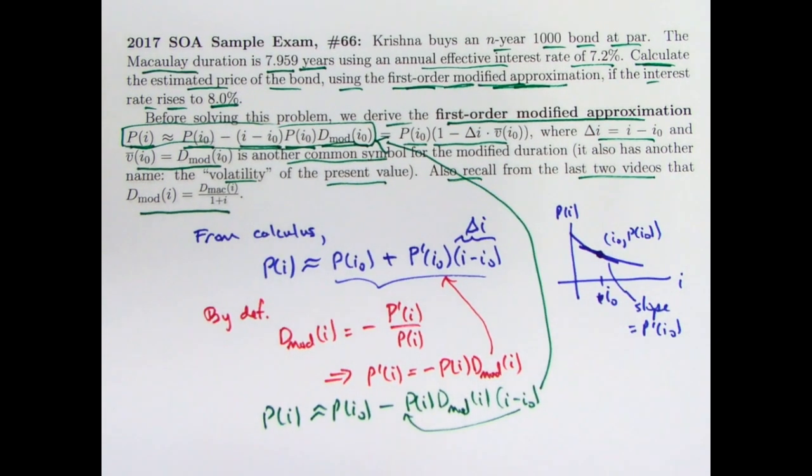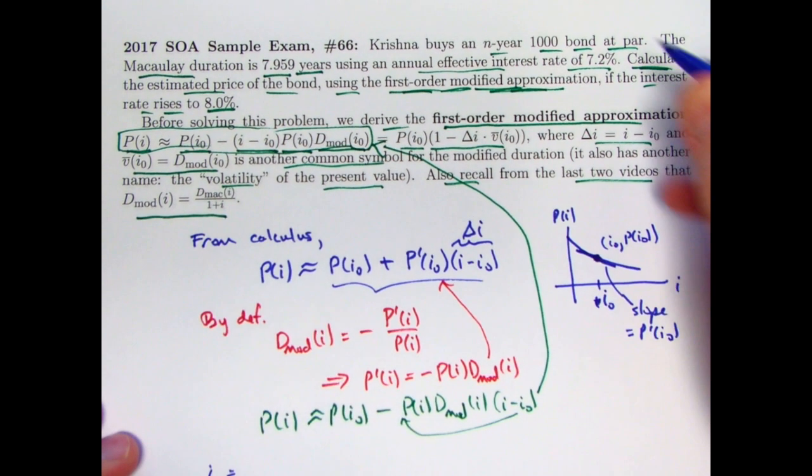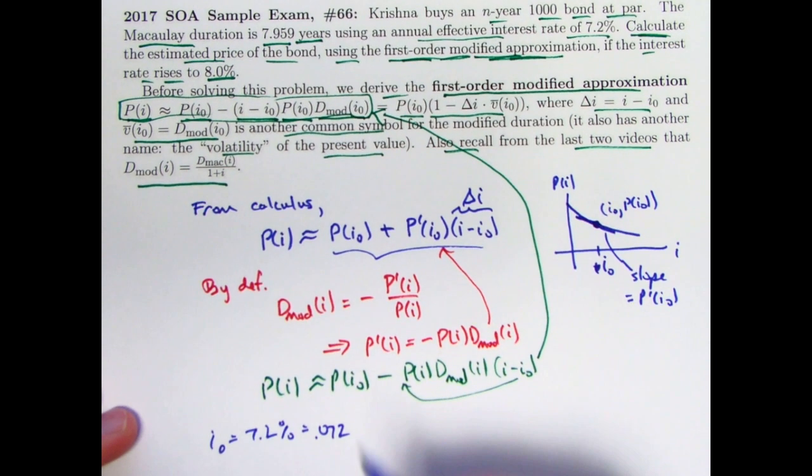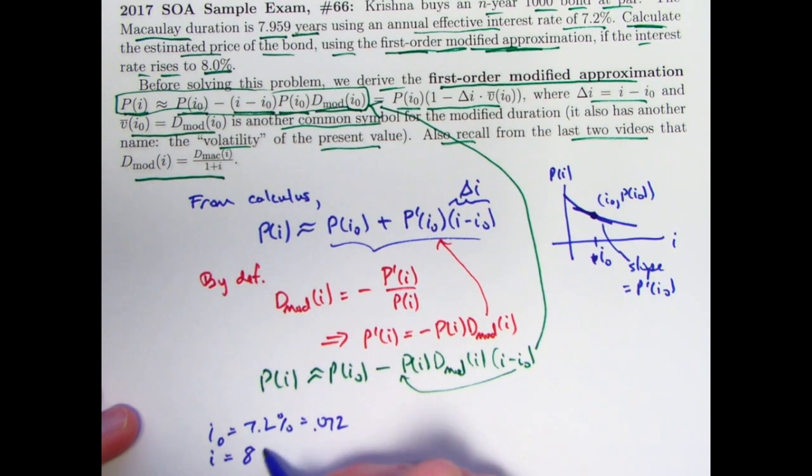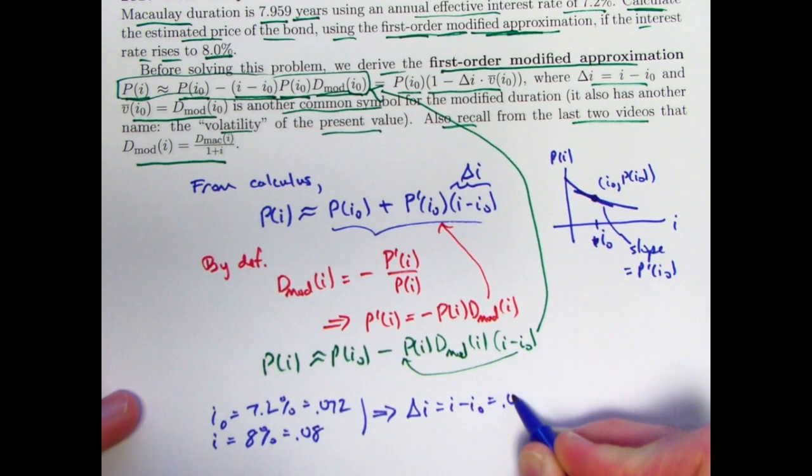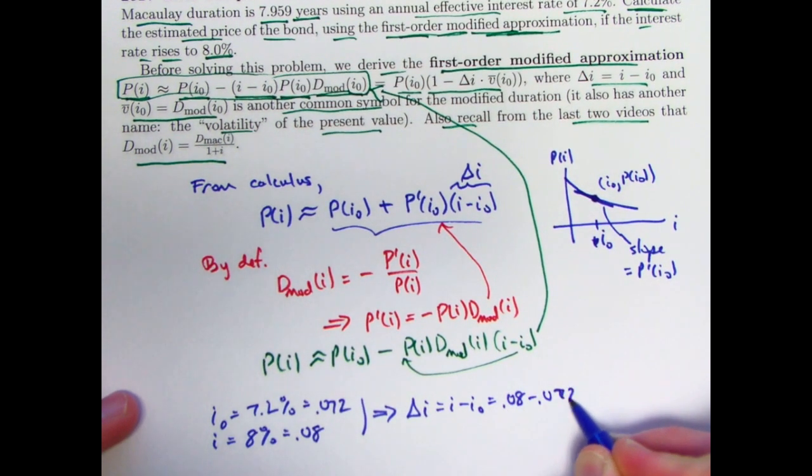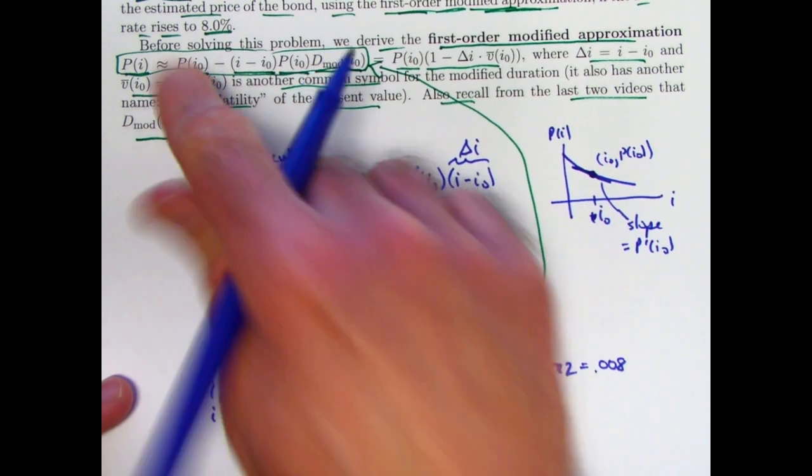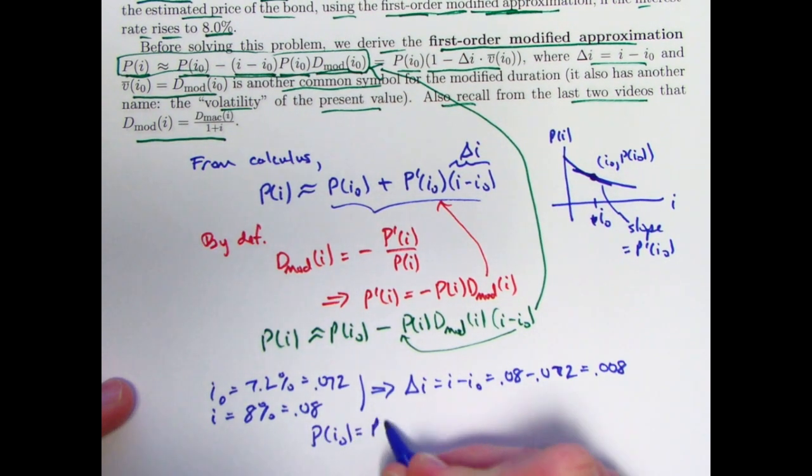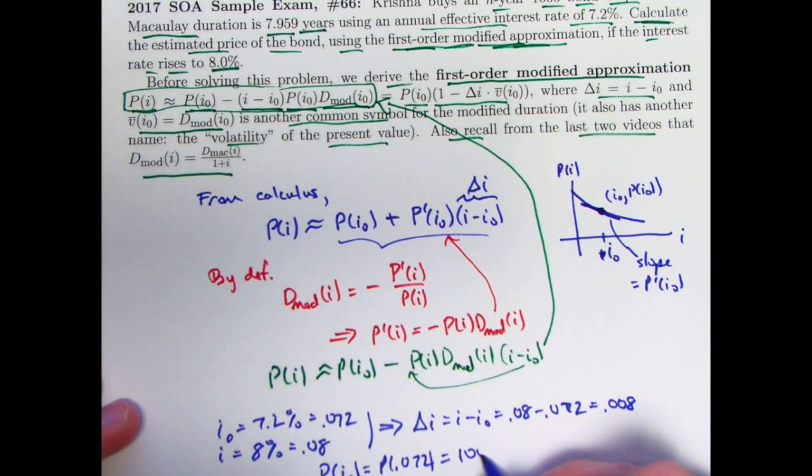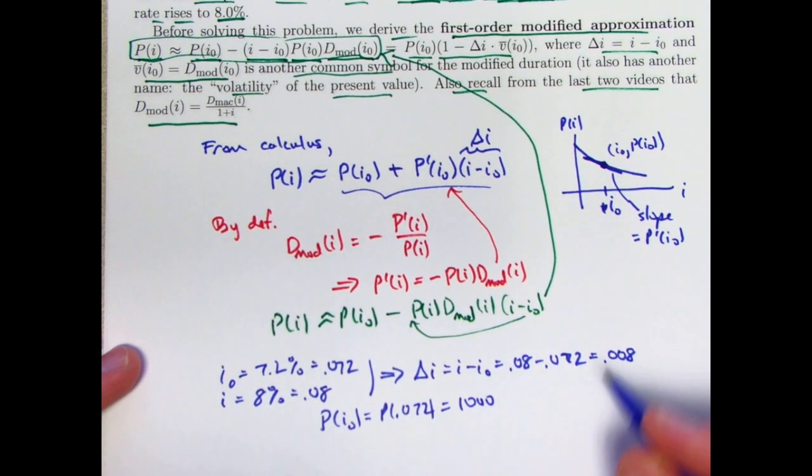Now we use it to solve the problem. And now it's just a matter of plugging the numbers in. So i0 is 7.2%, which you should write as 0.072. The i in question is 8%, which you should write as 0.08. That will mean the change in i, i minus i0, is 0.08 minus 0.072. That will be 0.008. That's the change in i. What else do we know? We know p(i0). p(i0), which is p(0.072). That's given to be 1,000 because we bought this bond at par. That's 1,000.